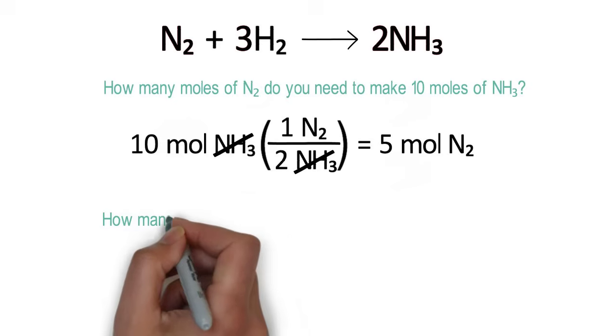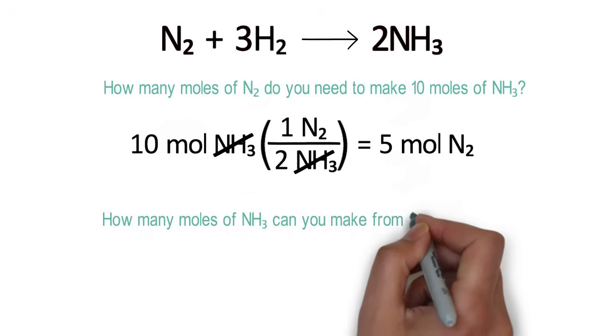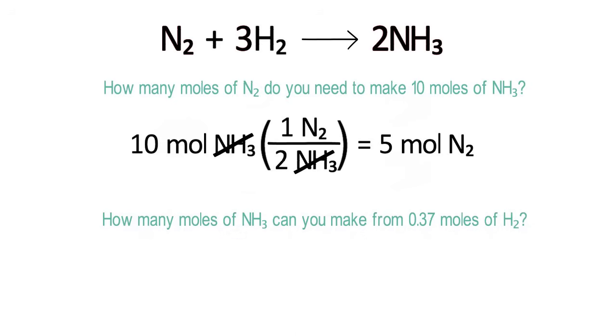Let's try one more problem. How many moles of ammonia can you make from 0.37 moles of hydrogen? First, write down the quantity that you know. 0.37 moles of hydrogen.